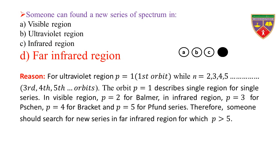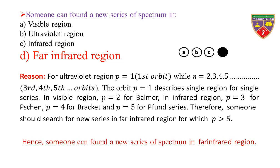For ultraviolet region, p = 1, n = 2, 3, 4, 5, and so on. The orbit p = 1 describes a single region for a single series. In visible region, p = 2 for Balmer. In infrared region, p = 3 for Paschen, p = 4 for Brackett, and p = 5 for one series. Therefore, someone should search for a new series in the far infrared region for which p > 5. Hence, someone can find a new series of spectrum in the far infrared region.